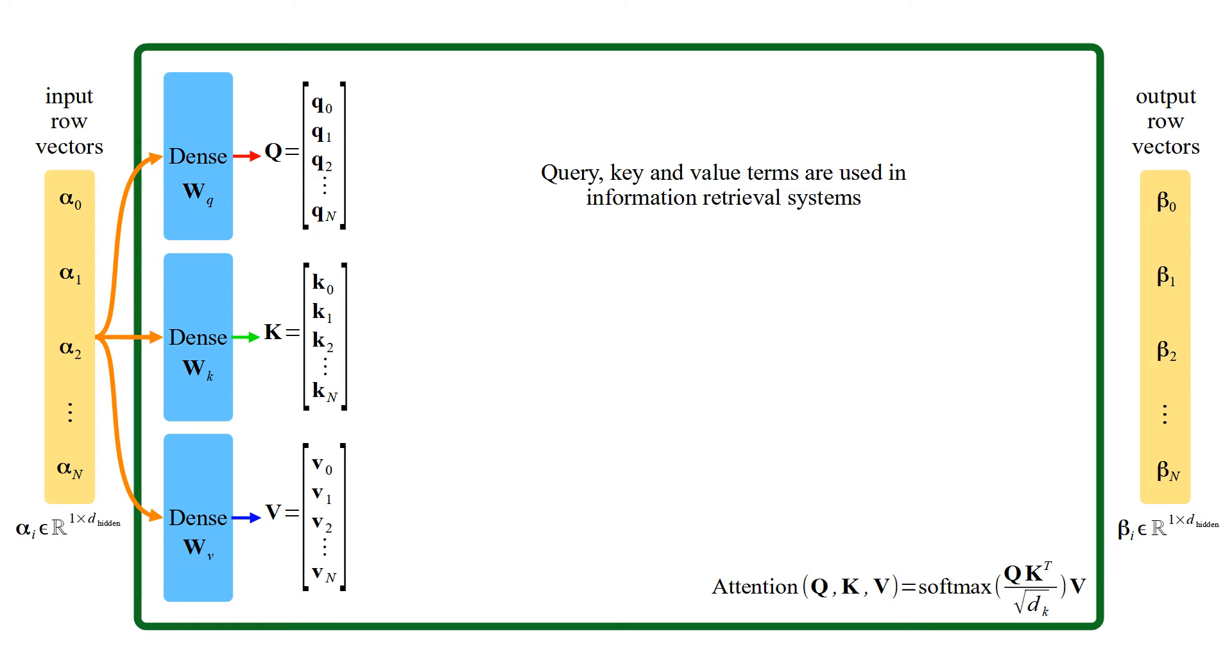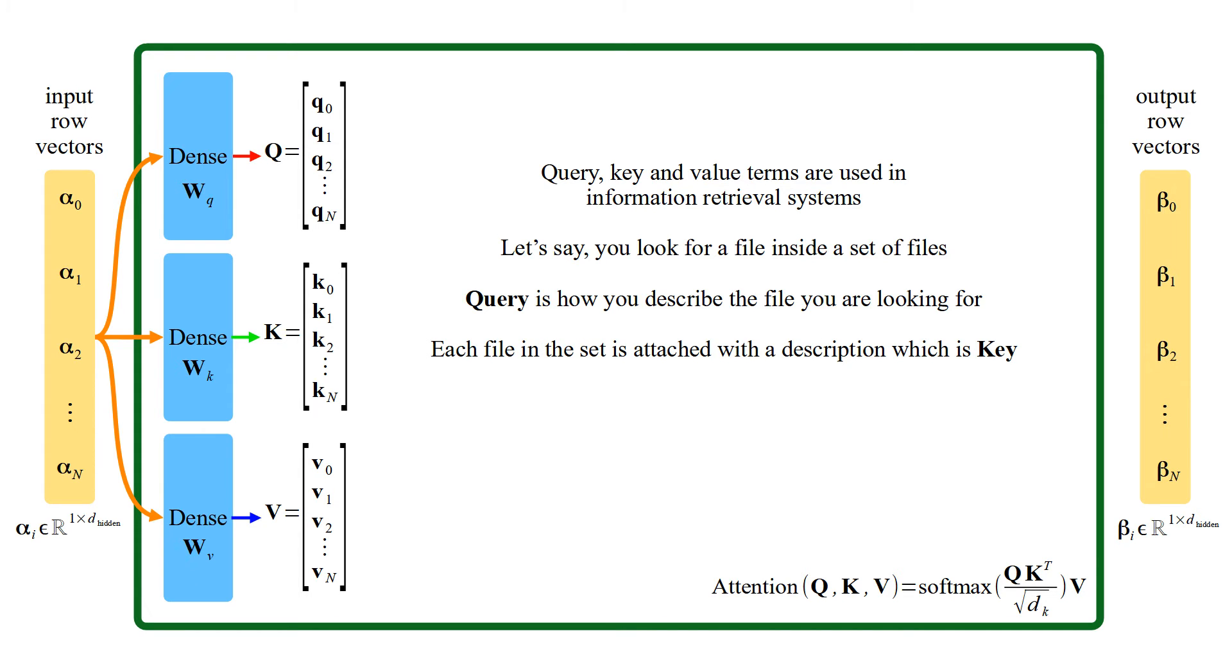Query, key and value terms are used in information retrieval systems. Let's say you look for a file inside a set of files. Query is how you describe the file you are looking for. Each file in the set is attached with a description which is key. Content of each file is its value.